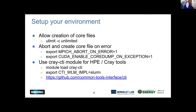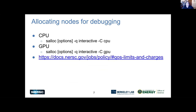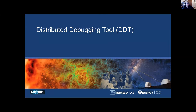CTI is tied into a lot of these tools, so you need to have the module loaded. You also need to set the environment variable CTI_WLM_IMPL, which is the CTI workload manager implementation — in this case we're using Slurm. For allocating nodes for debugging, use your CPU partition and set the constraint for CPU, same with GPU. Use the interactive or debug QOS depending on how long you need the node. There's a link to the limits and charges for setting up QOS.